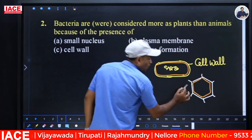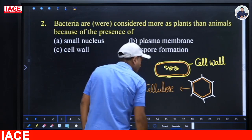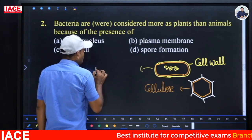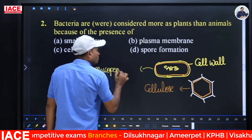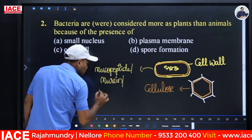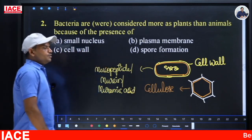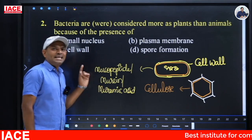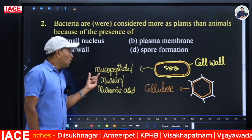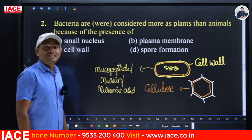The cell wall of a plant cell is made up of cellulose, whereas the cell wall of bacteria is made up of mucopeptide, which is also called murein or muramic acid. These three terms are the same. Mucopeptide is a non-cellulose substance in the bacterial cell wall. The plant cell wall is primarily made of cellulose; when a plant develops, cellulose is replaced by another material called lignin.